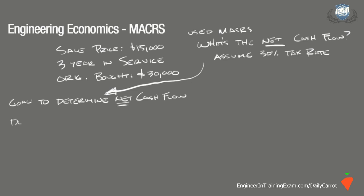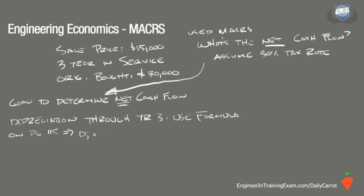The first step is to calculate the cumulative depreciation up to the date of the sale. The cumulative depreciation through 3 years can be calculated using the formula found on page 115 of the NCEES Supplied Reference Handbook for the Acceleration Cost Recovery System, which states that D sub J is equal to some factor times C, where D sub J is the depreciation in year J and C is the cost of the equipment. The factors can be found by referencing the modified ACRS table found on page 115 of the NCEES Supplied Reference Handbook.